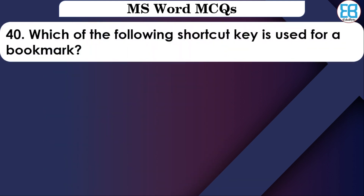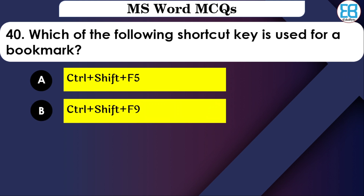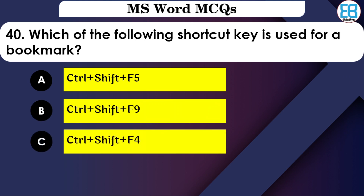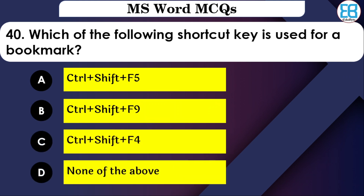Which shortcut key is used for Bookmark in MS Word? The options are: Ctrl+Shift+F5, Ctrl+Shift+F9, or Ctrl+Shift+F4. The correct option is Ctrl+Shift+F5.